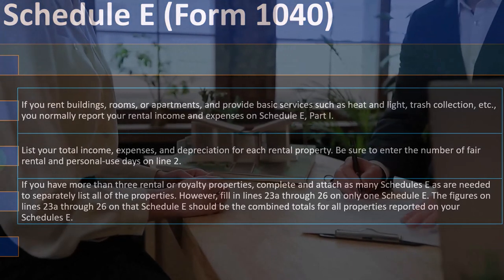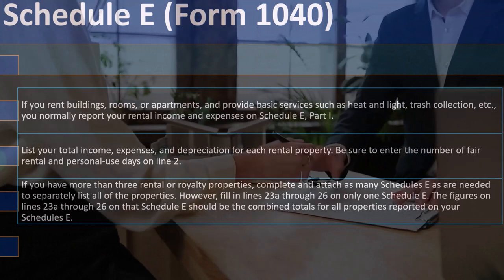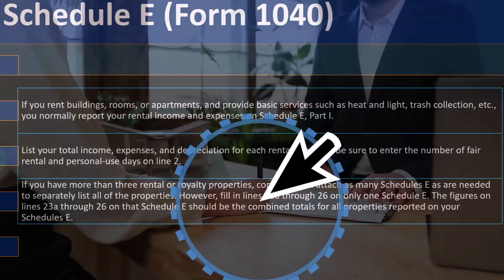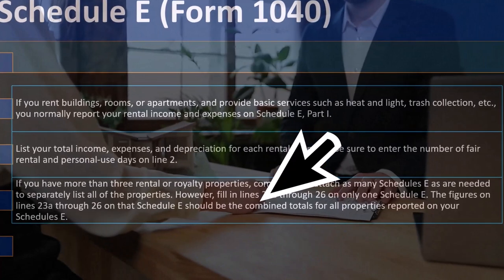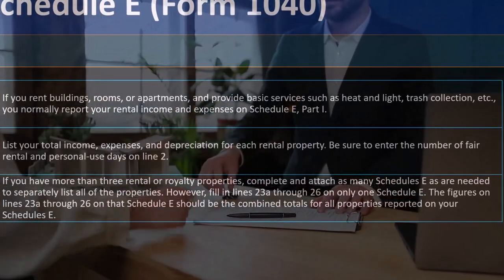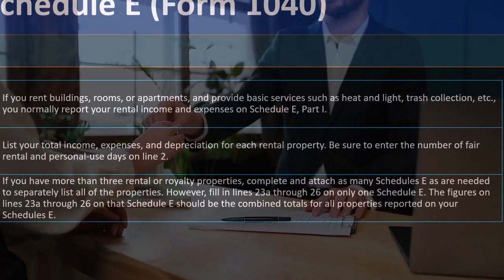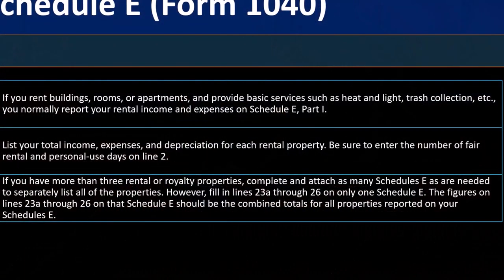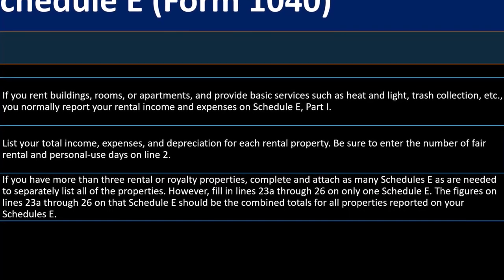However, fill in lines 23A through 26 on only one Schedule E. You'll have as many Schedule E's as needed for the income statement format, but the bottom part of the Schedule E — which helps figure your passive limitations — will summarize and group together all the Schedule E's.